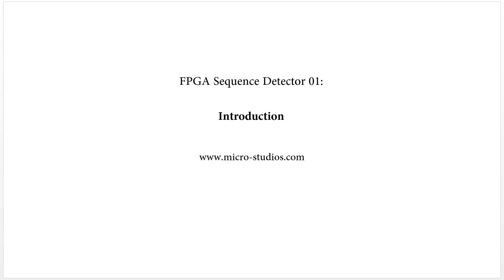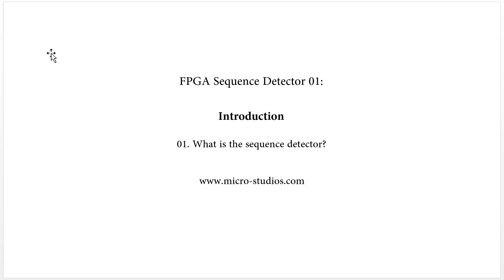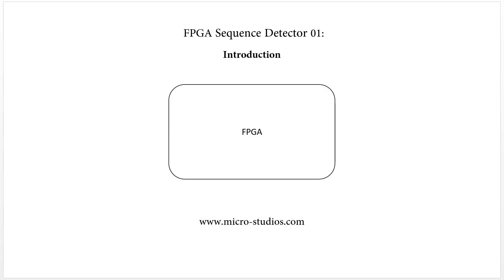So the first question is, what is the sequence detector? Assume we have one FPGA like this. The FPGA has one clock input, has another one reset input.